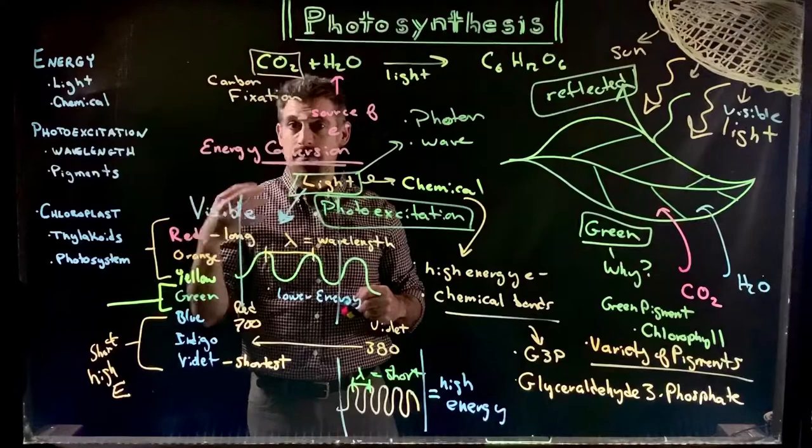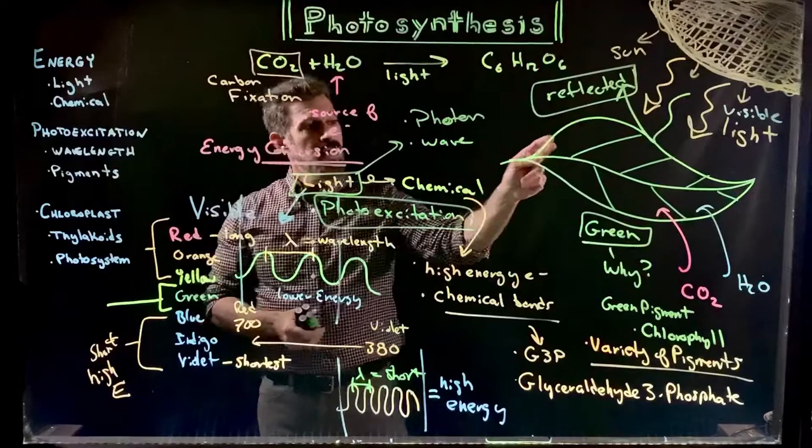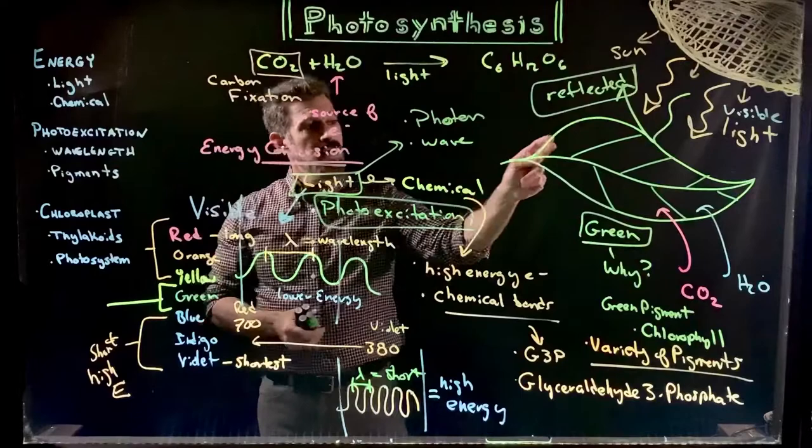So as we now get into the other parts of the structure and some of the details, you at least have a framework. So next we're going to go into talking about within the leaf, the chloroplast themselves, the chloroplast structure, and then some of the pigments, and then something called a photosystem, which is where a lot of these light-dependent processes are actually going to take place.